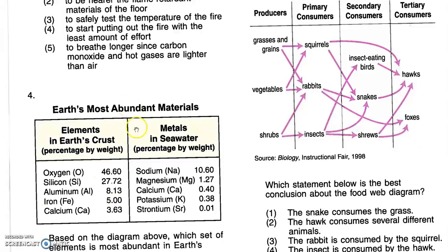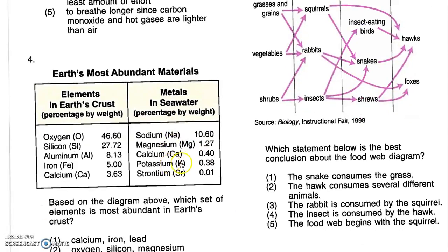On the other side we have materials in seawater, percentage by weight: sodium 10.6%, magnesium 1.27%, calcium 0.4%, potassium 0.3%, and strontium 0.1%.